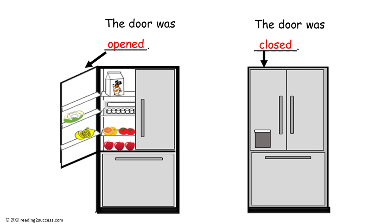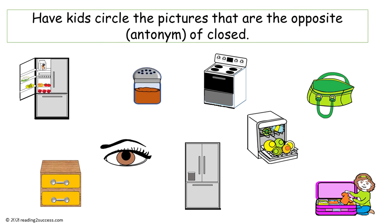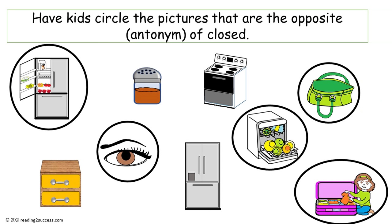Now have kids look at our first example of opposites: opened and closed. The door was opened; the door was closed. Now have kids circle the pictures that are the opposite, the antonym of closed — so they want to circle everything that is opened. The pictures that show something opened are the refrigerator, the purse, the eye, the dishwasher, and the suitcase.